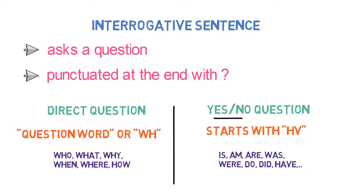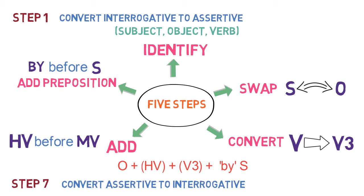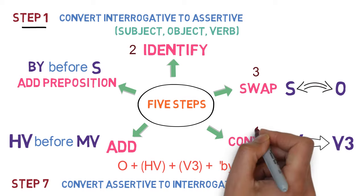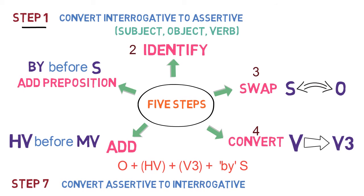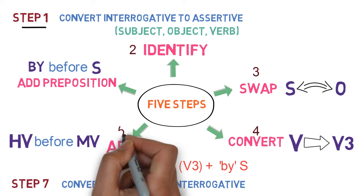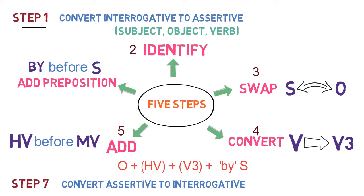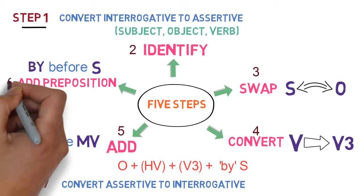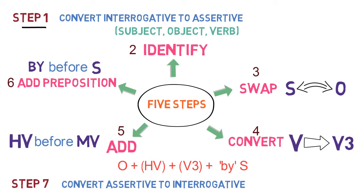Then we learned the 7 steps to convert yes-no type of questions to the passive form. The steps are: 1. Convert the interrogative sentence to assertive. 2. Identify the subject, object and main verb in the sentence. 3. Swap subject with object and object with subject. 4. Convert the main verb into the third form. 5. Add a proper helping verb of 'to be' form before the main verb. 6. Add preposition 'by' before the subject. 7. Convert the assertive sentence back to interrogative form.